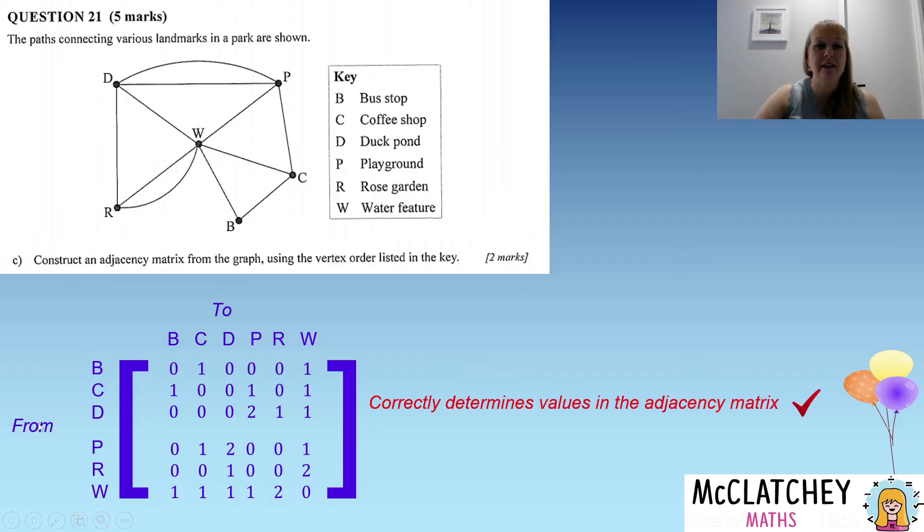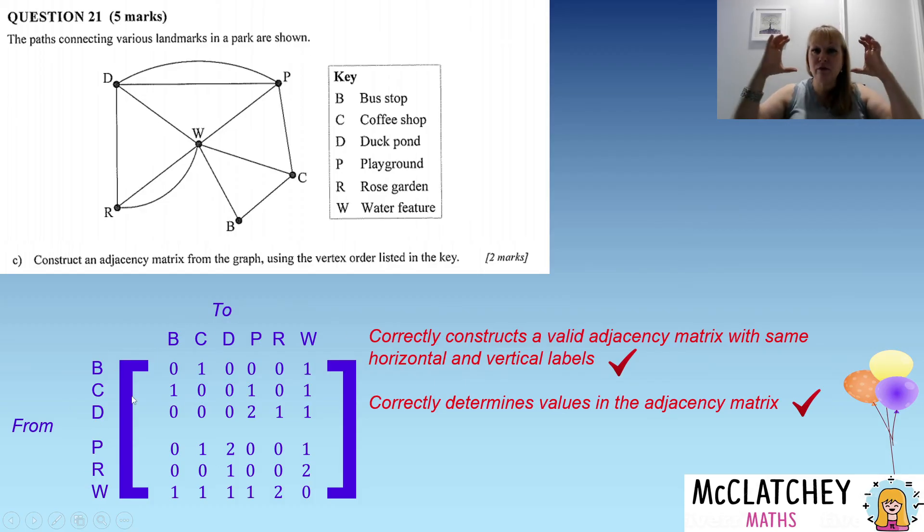Now our first mark was for correctly putting the right values into the matrix, so getting these numbers right: zero, one, and two. That was our first mark. And our second mark was actually having the matrix set up properly, so 'from' and 'to' labels on each side, having those rectangular brackets. That was our second part. So there's a communication element to it as well as getting the numbers right. You'll notice here the word 'correctly,' so if you've got one single value in that whole matrix wrong, you couldn't have got the mark. So it's important to check your work on these kinds of questions.